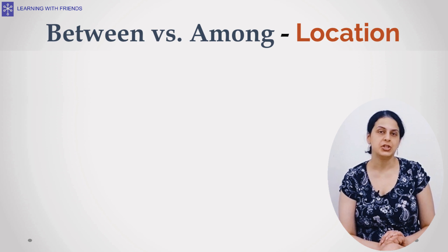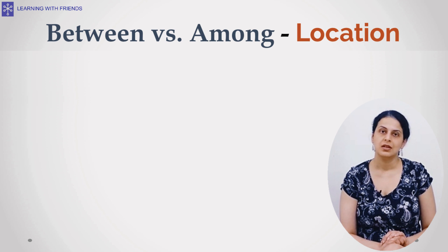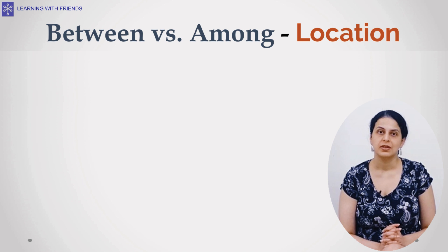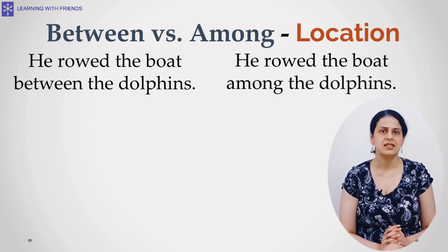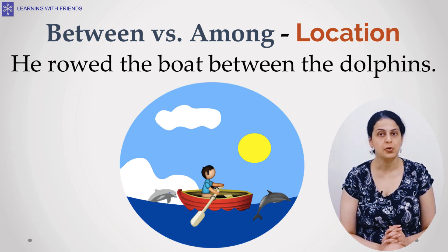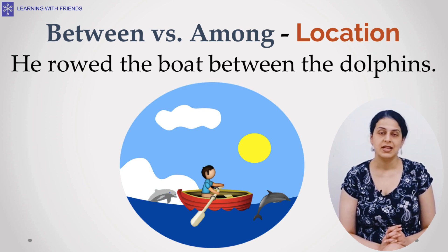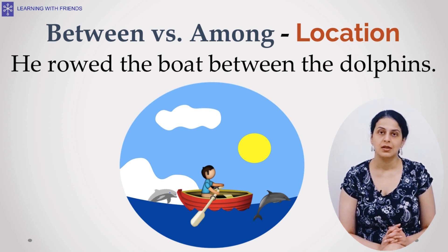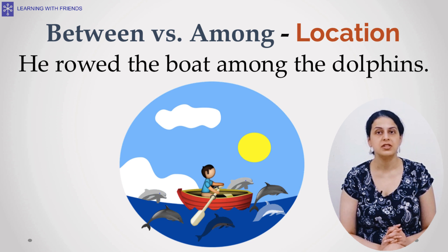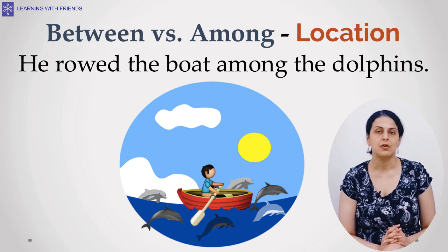Let's look at some more variations — specifically, 'between' versus 'among' in terms of location. Consider these two sentences: 'He rode the boat between the dolphins' and 'He rode the boat among the dolphins.' These are very different in meaning. The first, with 'between,' tells us he rode the boat between two dolphins. The second means he rode the boat surrounded by several dolphins — or, using the right collective noun, surrounded by a pod of dolphins.